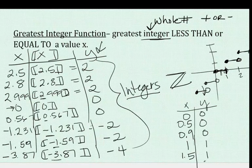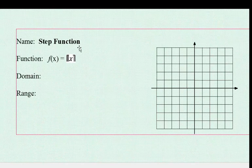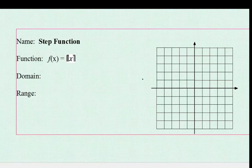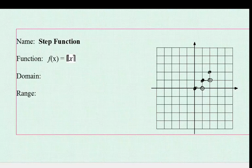Let's talk about the general parent function. This is what you need to learn — the symbol is double bracket x. For domain and range, we said our pattern looks like this: a closed circle at (0, 0), then an open circle at (1, 0), and then it steps up — open, up, close, open — and you could go on and on and on.